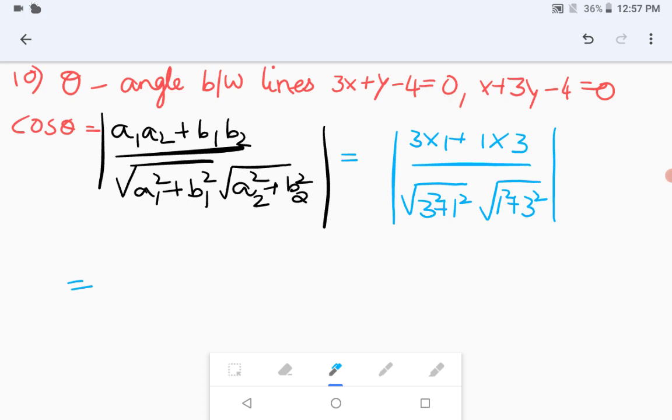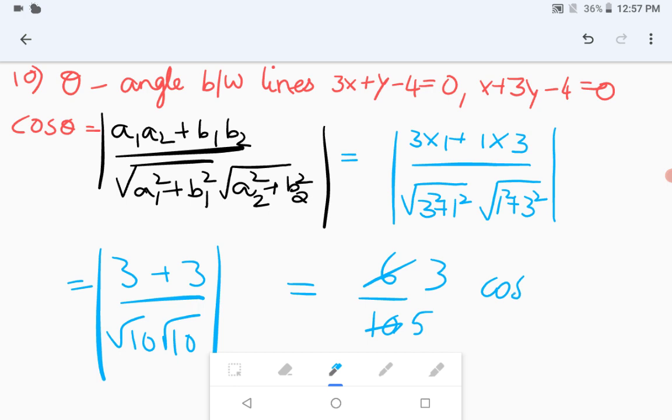So I have substituted the values of a1, a2 in this given formula. Now 3 times 1 is 3, and then 1 times 3 is also 3 divided by 3 square plus 1 square is 9 plus 1 is 10, so root 10 and in the same similar way, also root 10. Now 3 plus 3 is 6 and root 10 into root 10 is 10. So when we simplify this, the cos theta of this is 3 by 5.